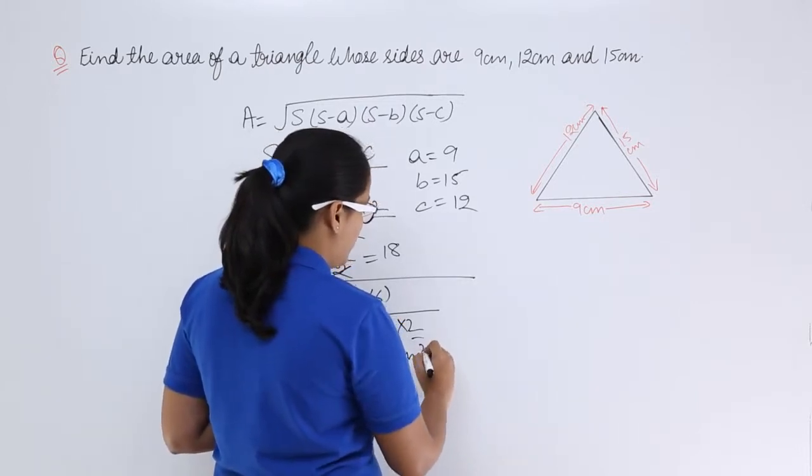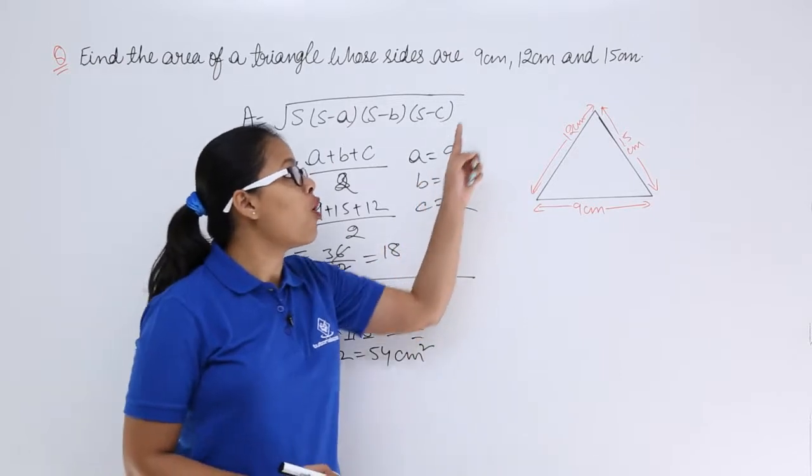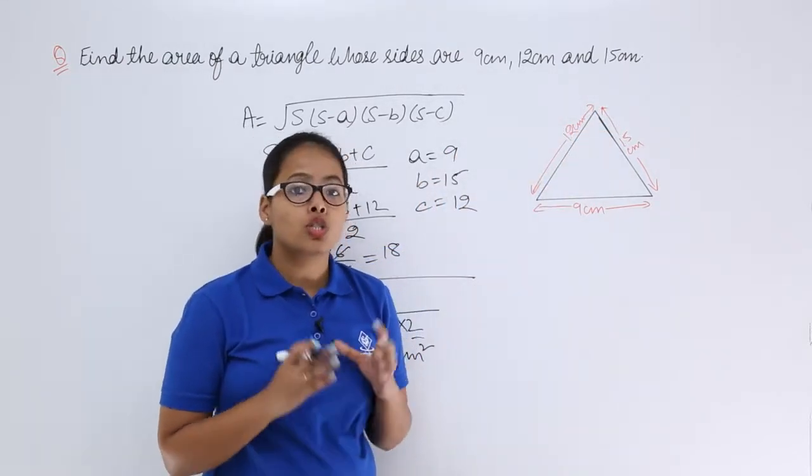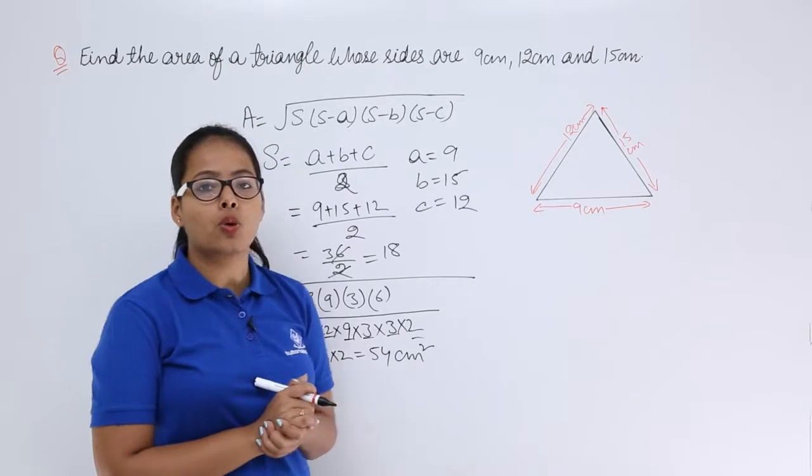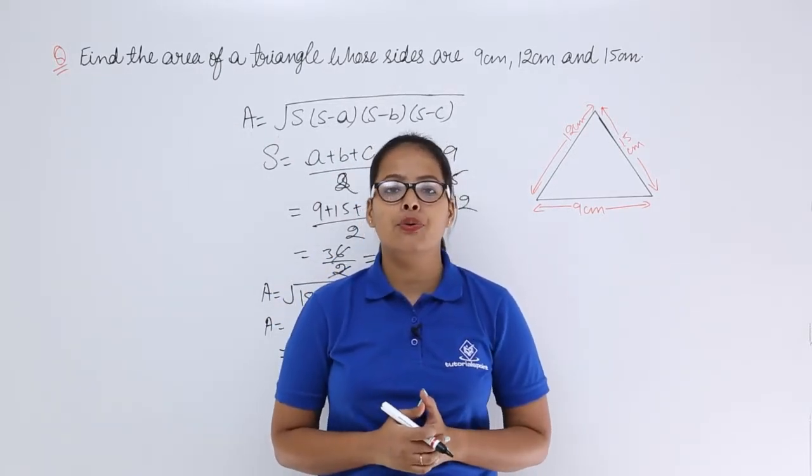So your area is going to be 54 centimeter square. Why centimeter square? Because length of all the sides are in centimeter. So I hope there should be no doubt in this question. I will be taking likewise questions in coming video lectures as well. Thank you.